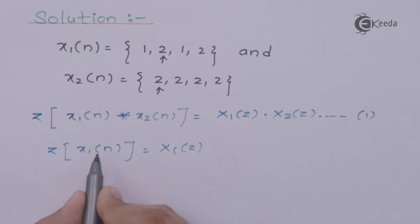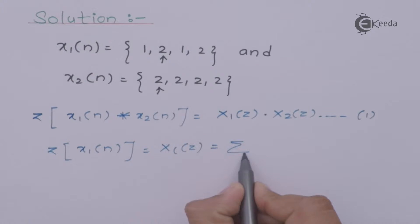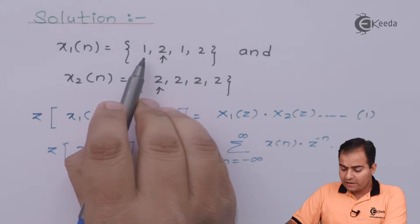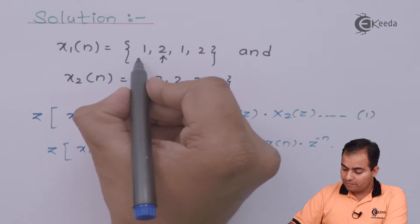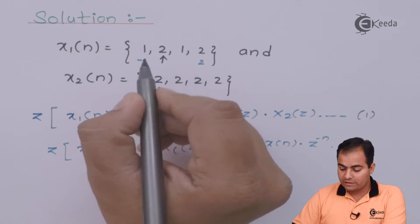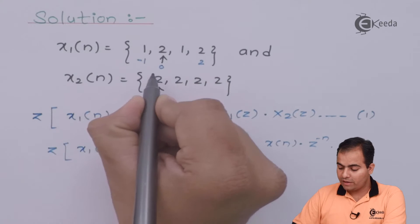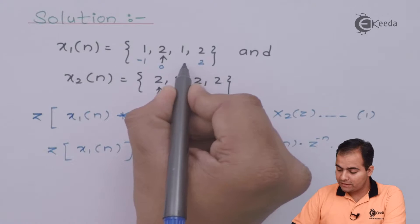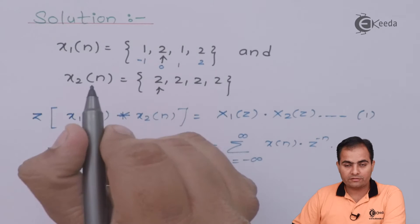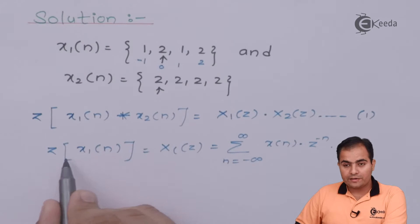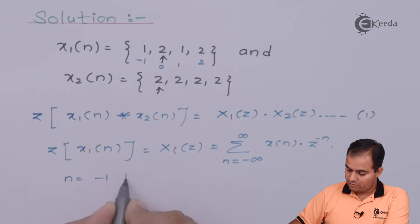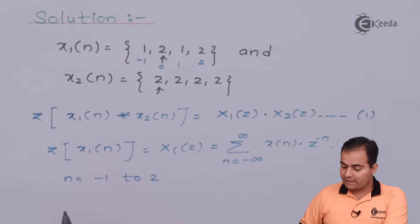The Z-transform of X1(n) is represented as X1(Z) and is defined by the standard summation formula. We have only four samples available from n = minus 1 to n = 2. To get these values, mark the origin at 0; on the right-hand side we have positive instants 0, 1, and 2, and on the left-hand side we have the negative sample at minus 1. So while calculating the Z-transform of X1(n), the summation runs from minus 1 to 2.